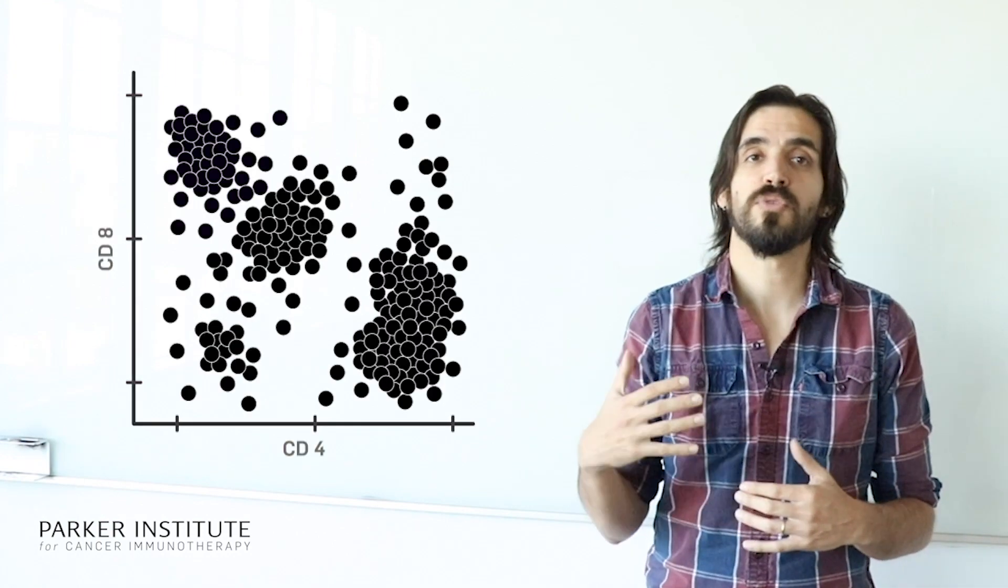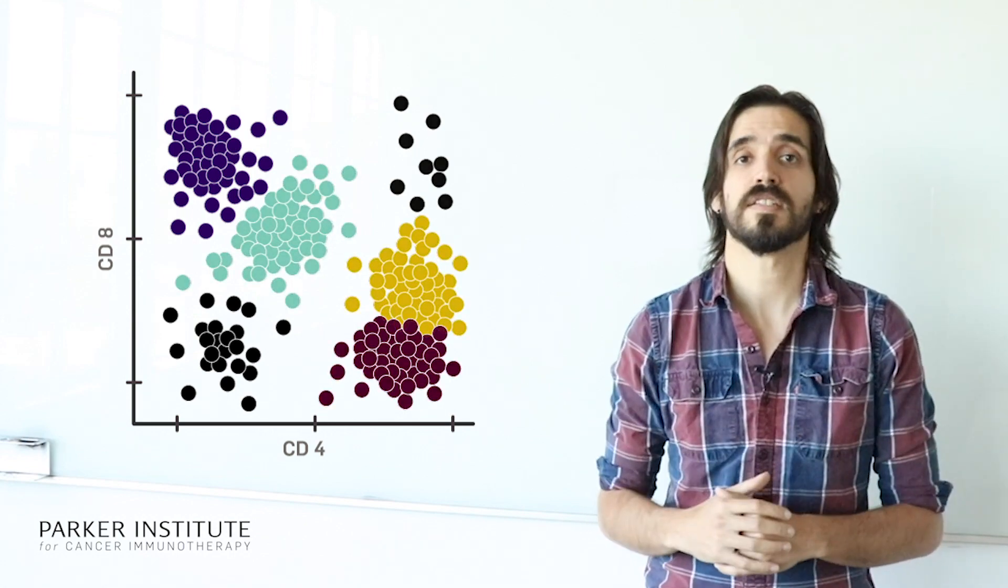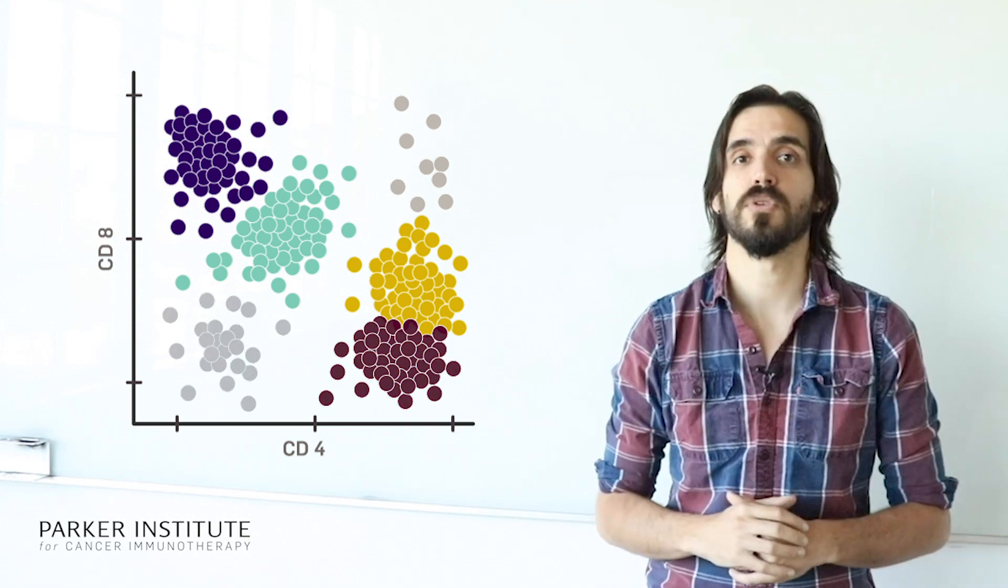So one way to get around this problem is to use the process of clustering. Clustering is the process of using a computer algorithm to identify groups of cells that are similar in your data, and therefore form a cohesive unit.